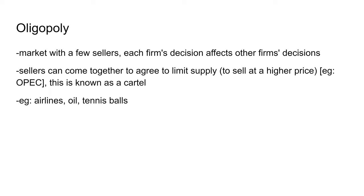A great example of a cartel in the world is OPEC, the Organization of Petroleum Exporting Countries. Other examples of oligopoly markets include airlines, oil, and tennis balls.